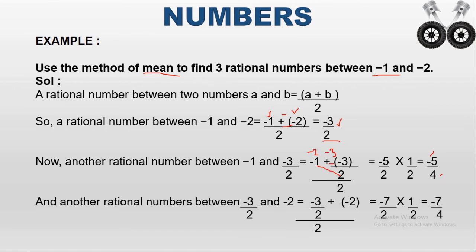The next rational number is minus five by four. To find another rational number, you have to choose minus three by two — the average — with the second rational number, minus two. So: minus three by two plus minus two, whole divided by two. Two and minus two are multiplied. So minus three minus four.